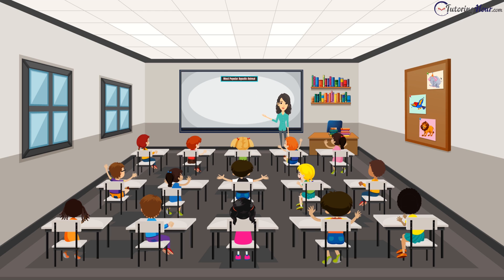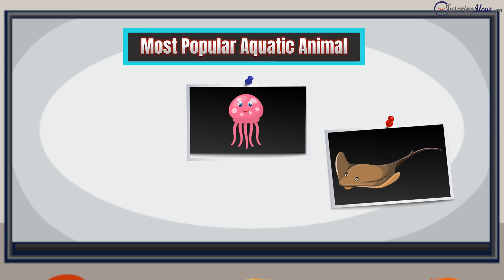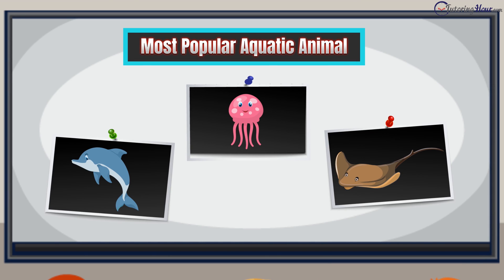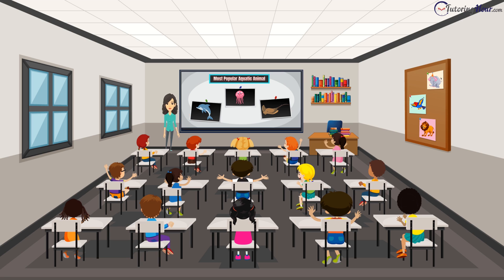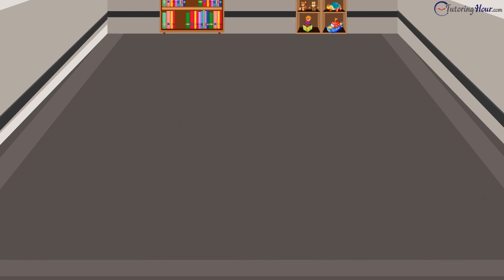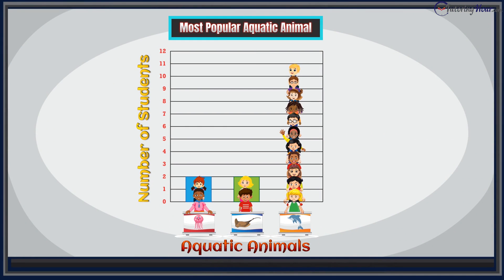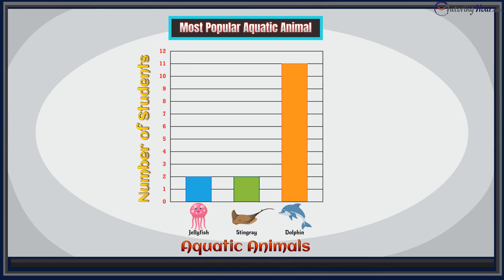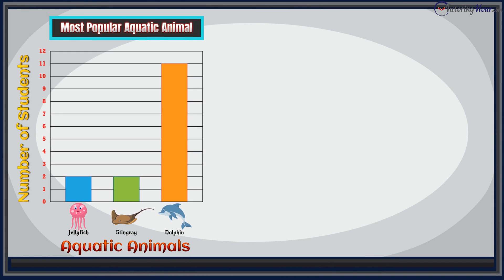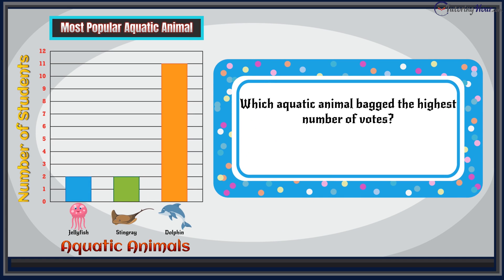Ms. Jenkins then went on to ask her students about the aquatic animals they wanted to see at the aquarium. The kids' choices included the jellyfish, stingray, and dolphin. To find out which was the most popular aquatic animal, Ms. Jenkins asked the kids to split up into three groups based on the animal they liked. Converting that into a bar graph would look like this. Which aquatic animal bagged the highest number of votes? The dolphin, hands down, is the winner!